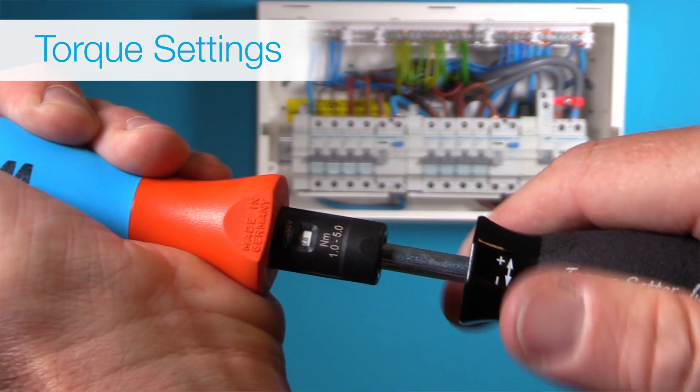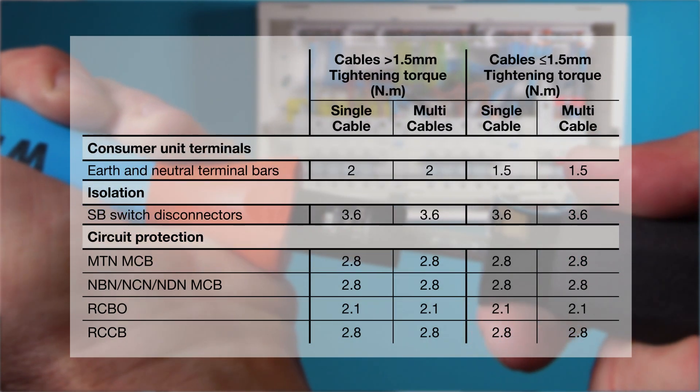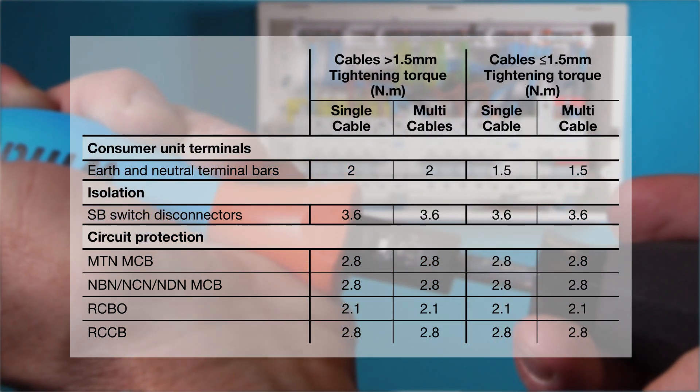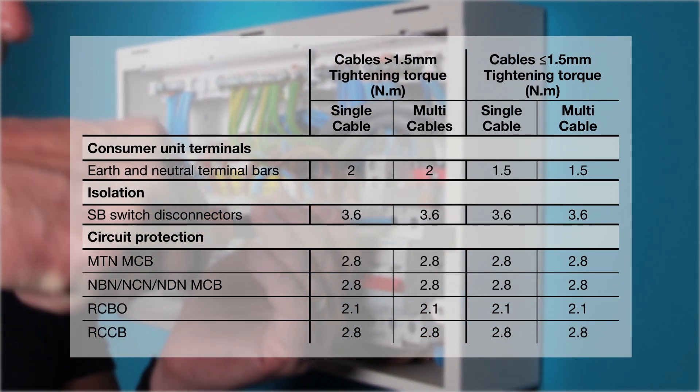Recommended torque settings should be used to ensure that a sound electrical connection is achieved. Please note that on cables 1.5mm² and below, Hager recommend doubling the conductor over.